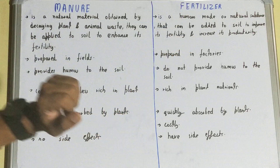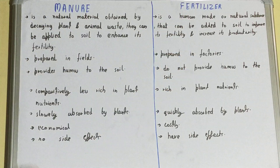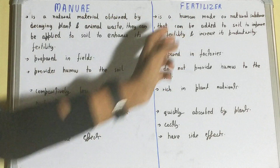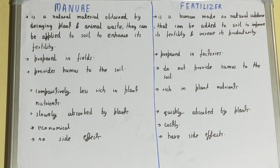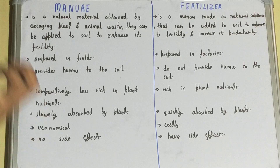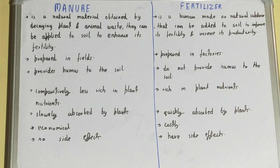If we talk about fertilizer, it is a human-made or natural substance that can be added to the soil to improve its fertility and increase its productivity. It is a kind of human-made or natural substance applied to the soil to increase its fertility.